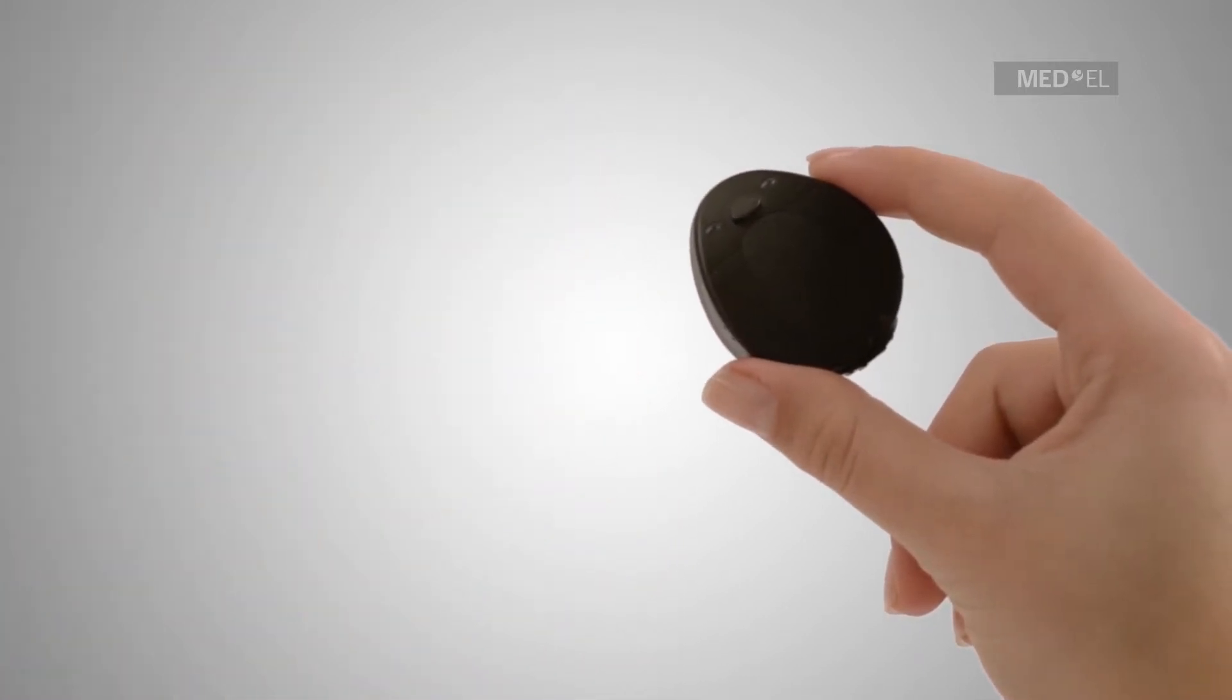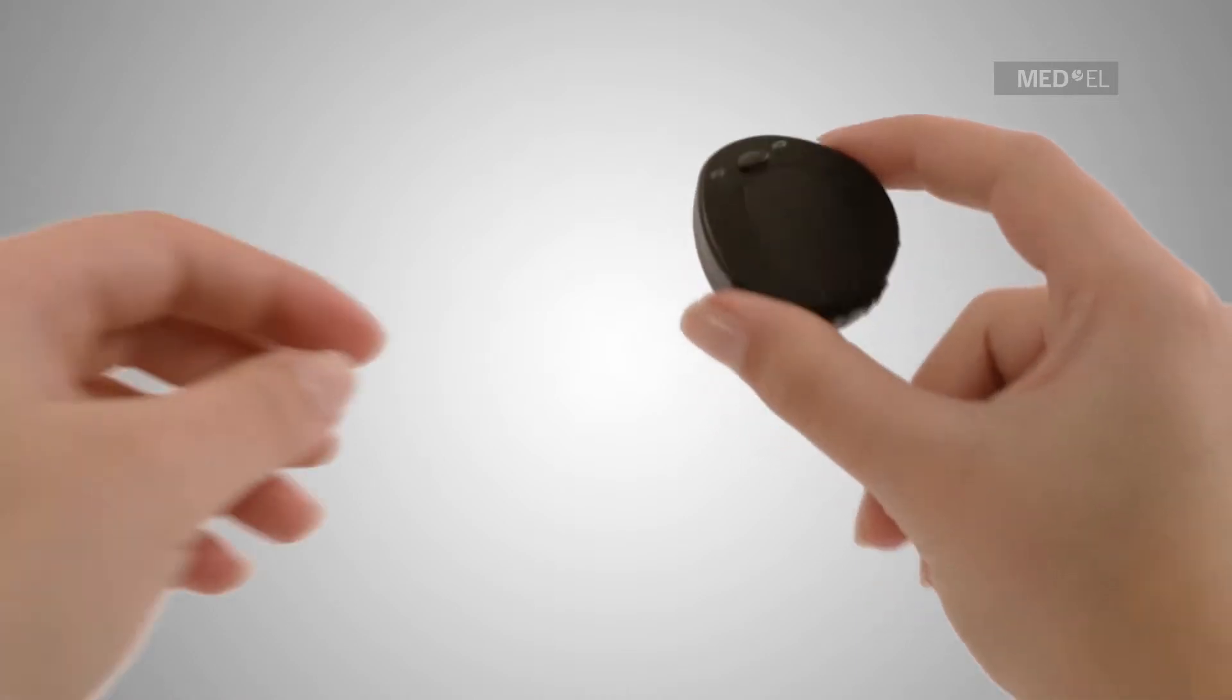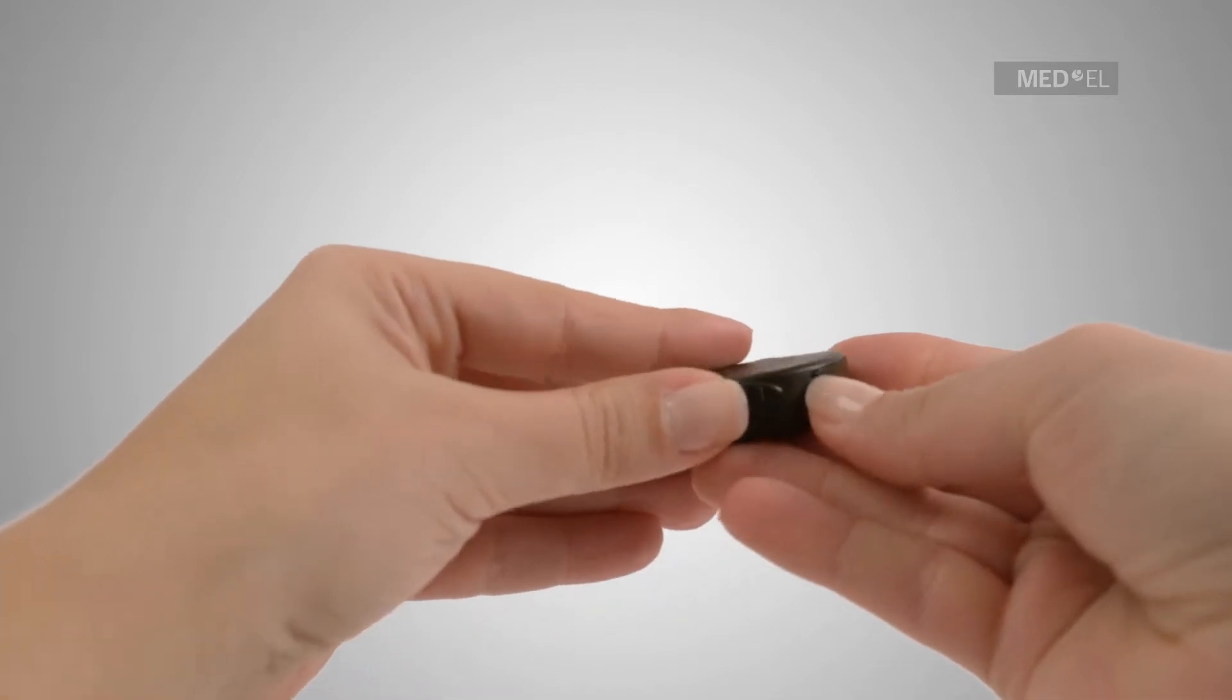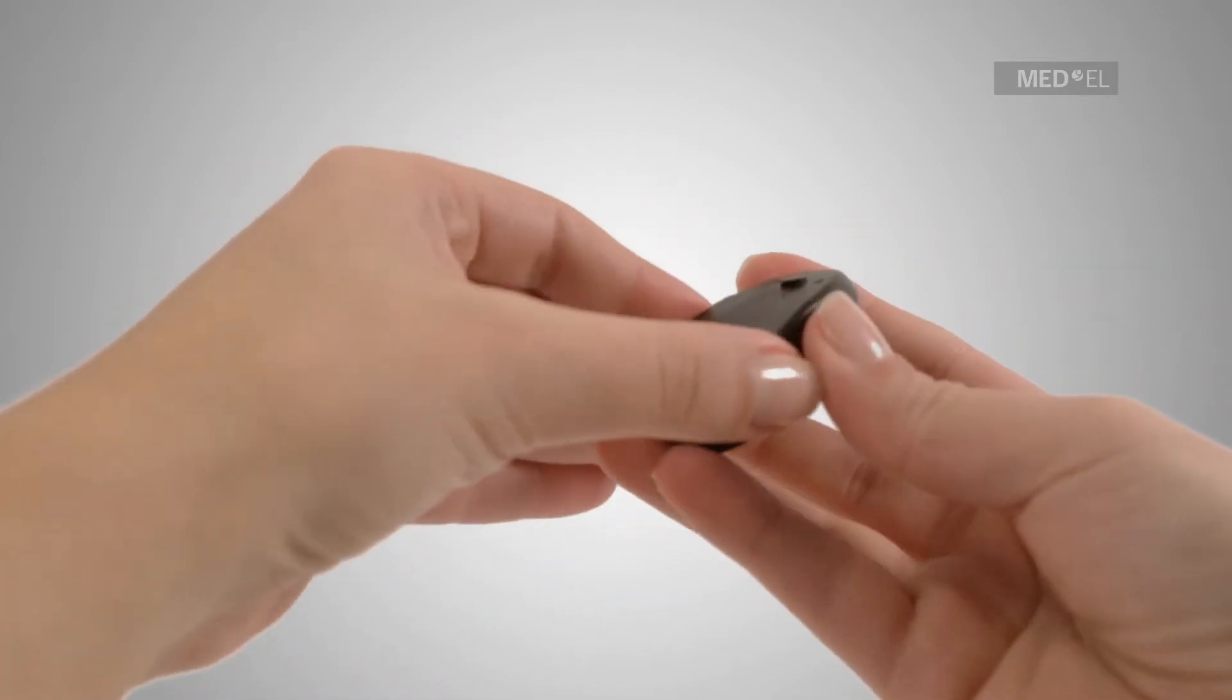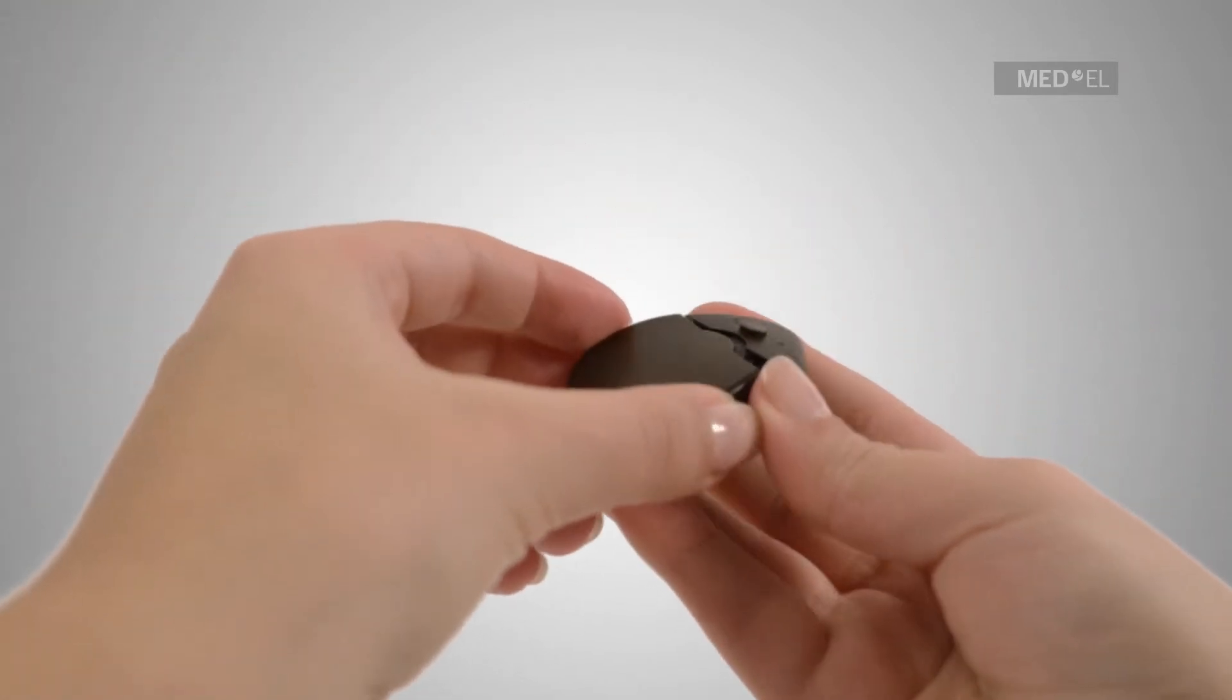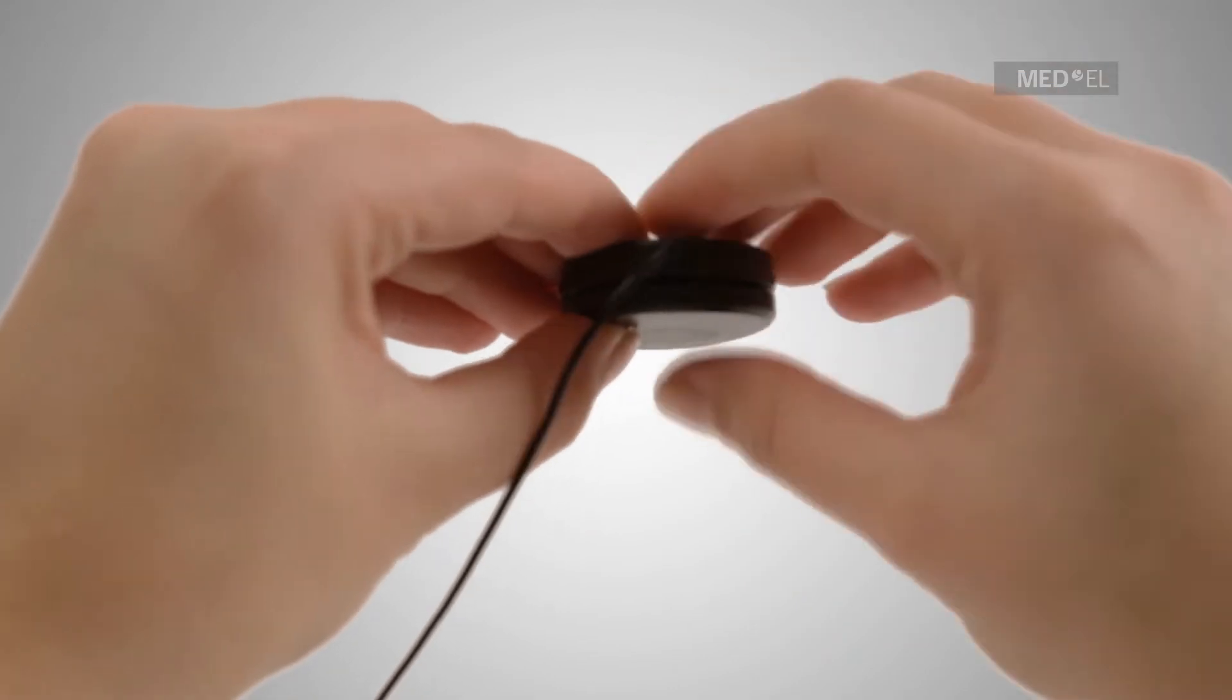To connect the RONDO control unit to the Mini Battery Pack for RONDO, first remove the RONDO battery pack and replace it with the RONDO connection cable. Use the gently landing airplane method to attach the RONDO connection cable, then lock it into place.